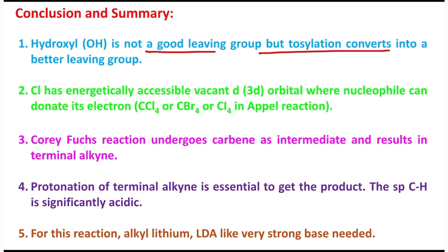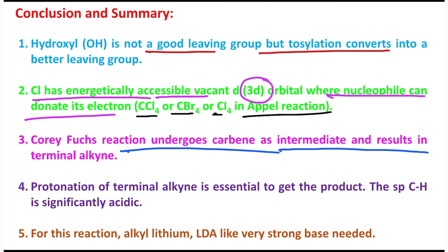So in conclusion, what you have learned today? Hydroxyl is not a good leaving group, but in order to make it a good leaving group, tosylation is needed. Tosylation is one of the methods. This chlorine has energetically accessible vacant d orbital, or more specifically 3d orbital, where nucleophilic attack can happen and nucleophile can donate its electrons. Similar type of reactivity you have observed in carbon tetrachloride or carbon tetrabromide or carbon tetraiodide reaction in named reactions like Appel reaction.